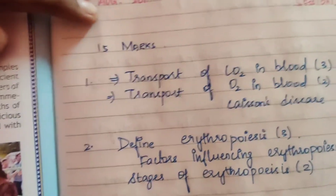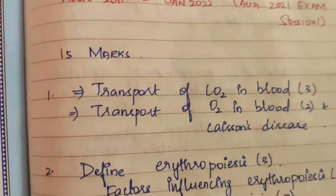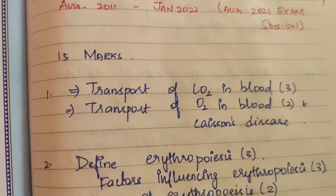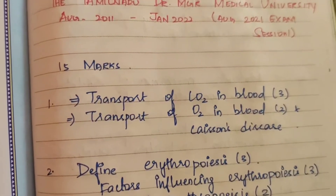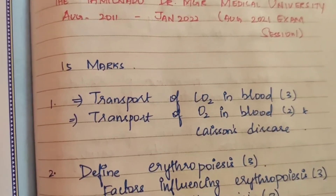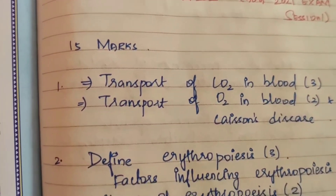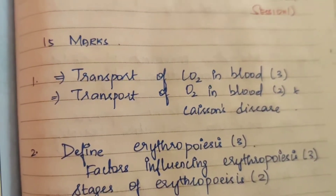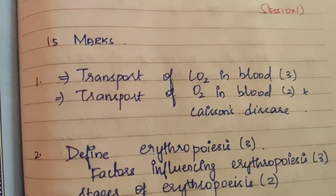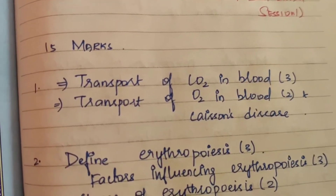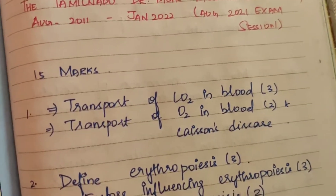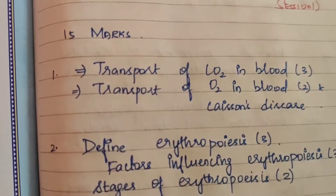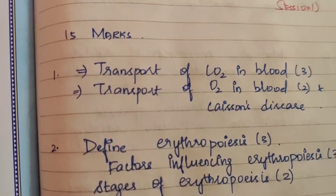First question is 15 marks. I will mention whether each question is 15 marks or 5 marks. First question: Transport of carbon dioxide in blood — asked 3 times, for 15 marks and 5 marks. Next: Transport of oxygen in blood — asked 2 times, including with Caisson's disease.